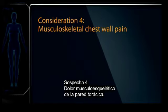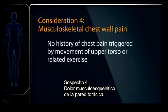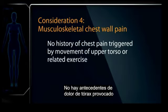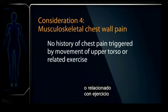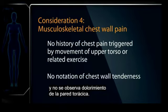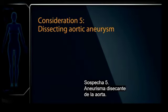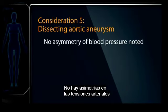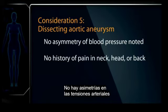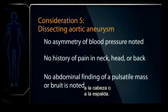Musculoskeletal chest wall pain — there is no history of chest pain triggered by movement of the upper torso or related exercise, and no notation of chest wall tenderness. Dissecting aortic aneurysm — there is no asymmetry of blood pressure noted and no history of pain shooting into the neck, up the side of the head, or into the back.